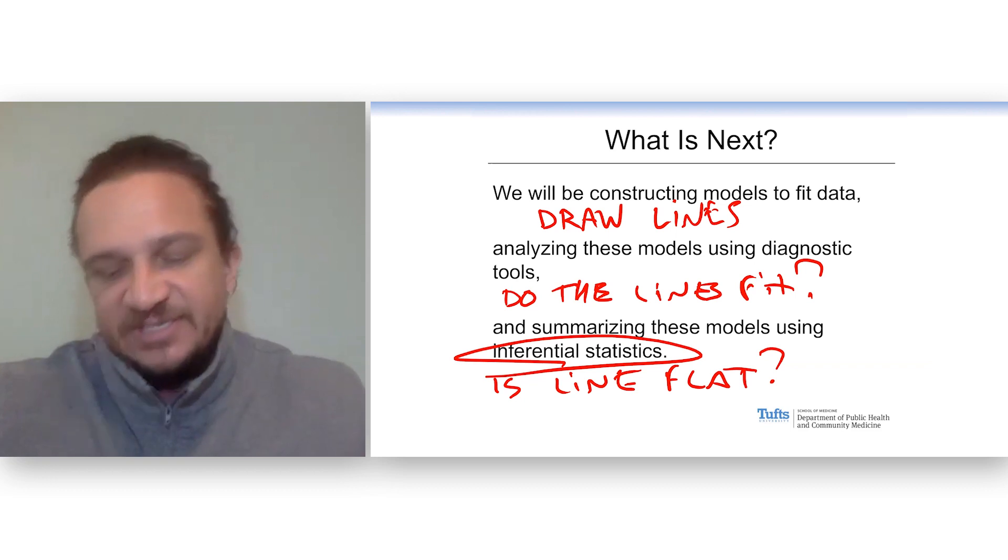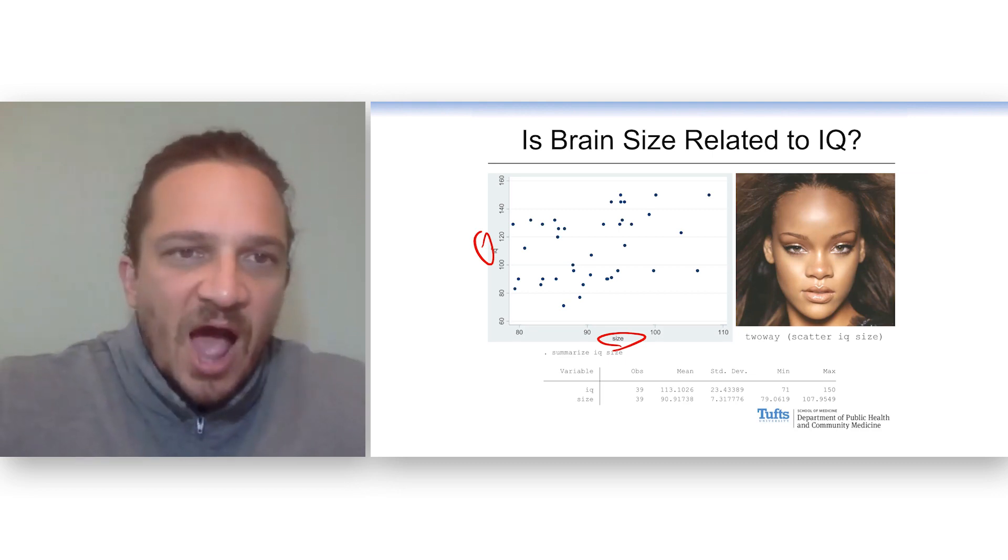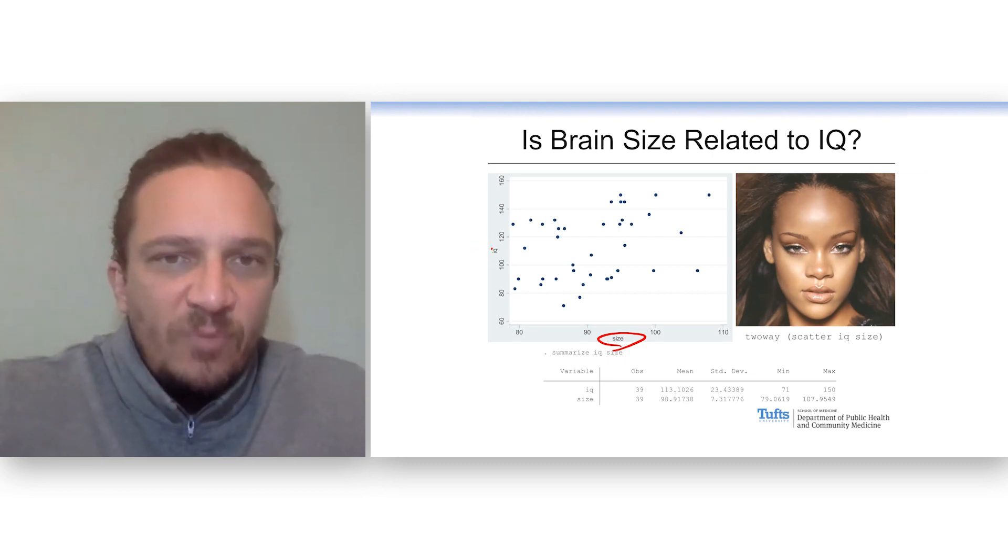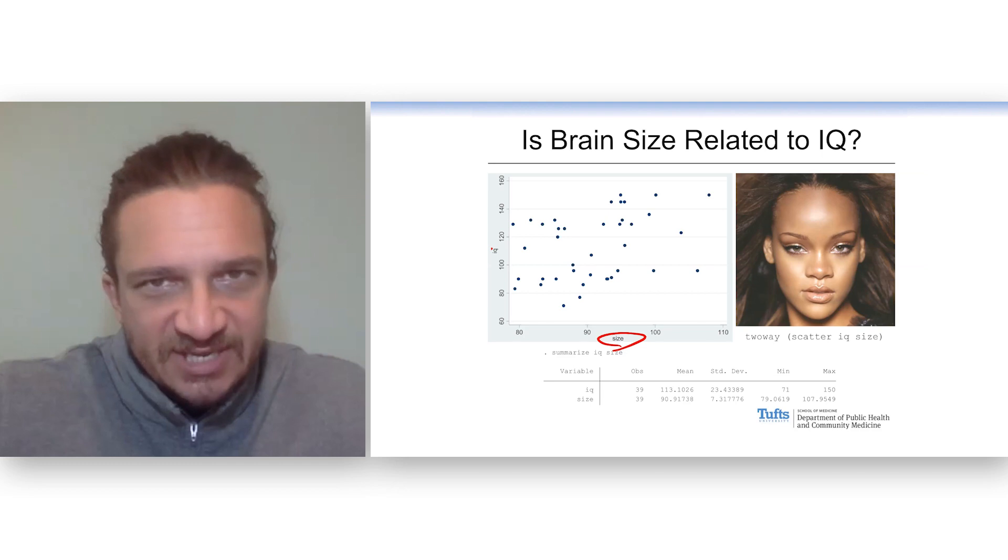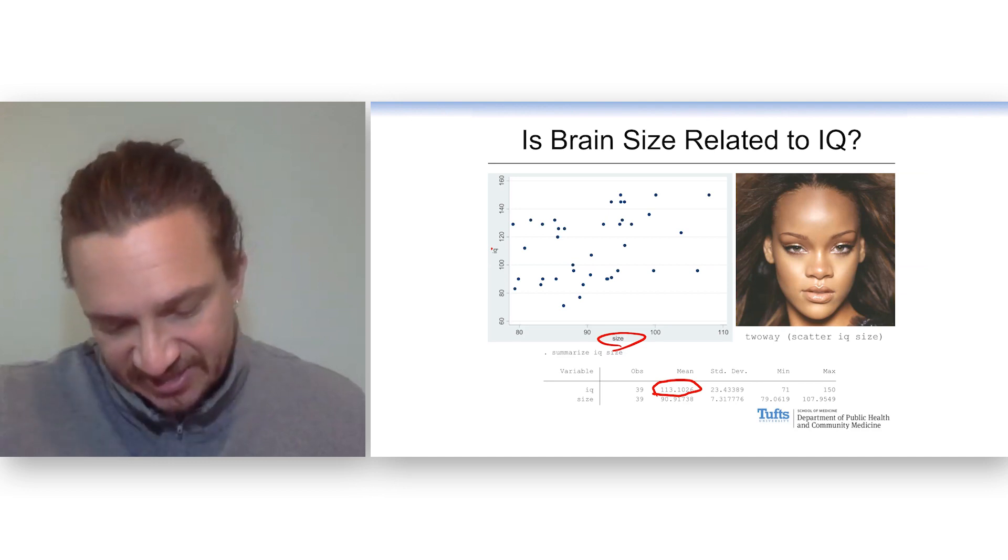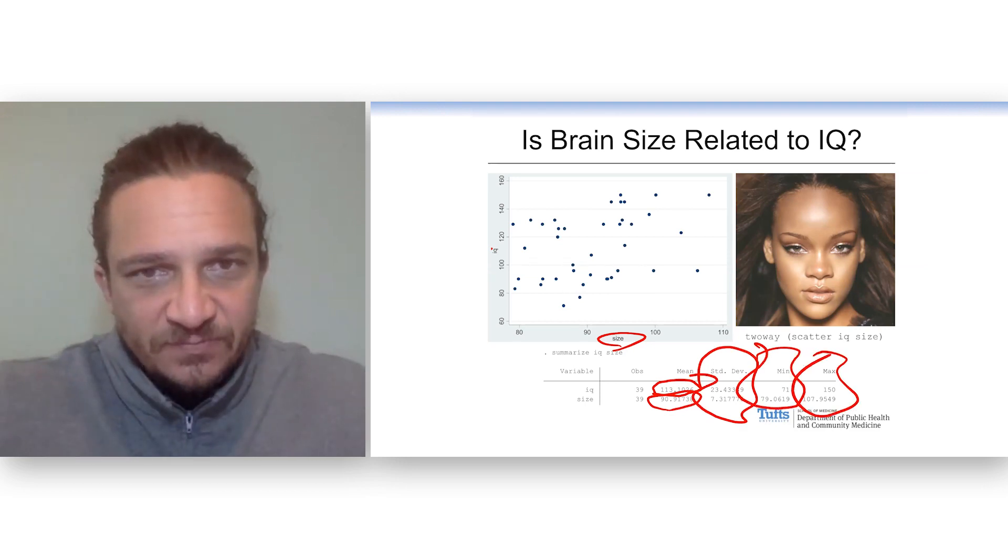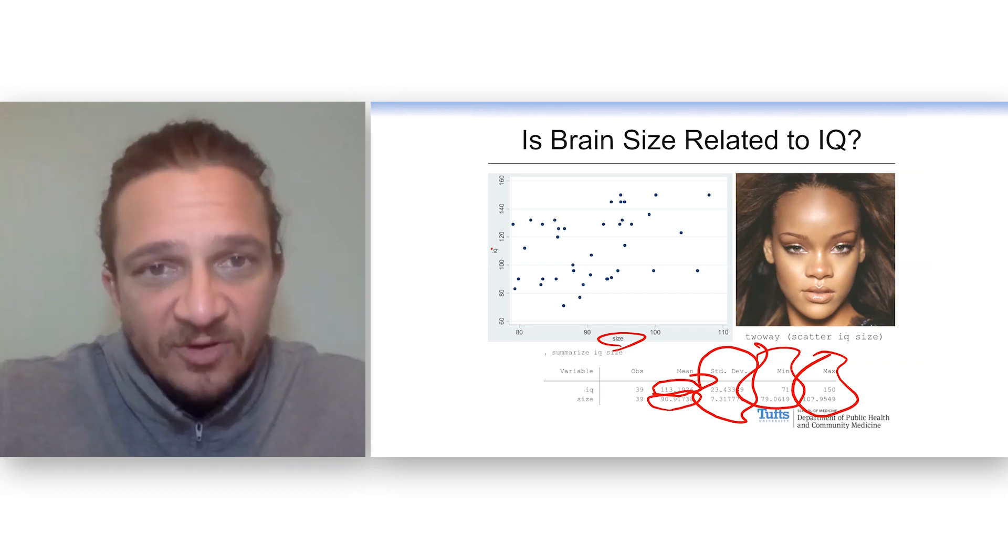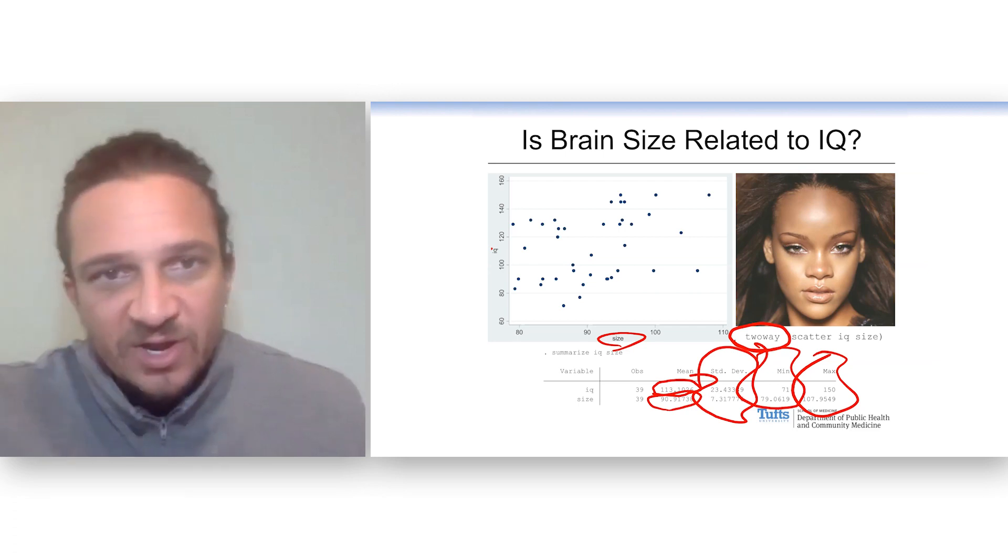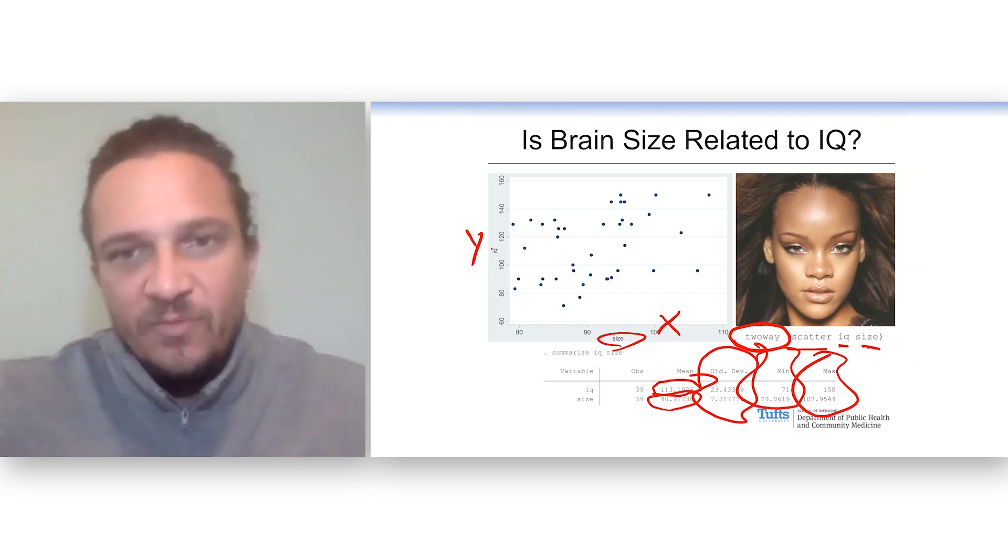Some relationship between X and Y. Here's some data on the size of your brain and your IQ. IQ is a dumb variable, but we'll use it here as some continuous measure. And we can look at some summary statistics of central tendency for the X and the Y, and we can look at the measured spread and the range. To draw this out, we look at two-way scatter, and then you put your Y variable first, and then your X variable.